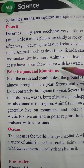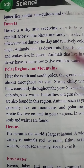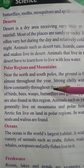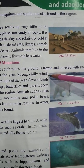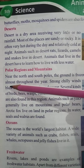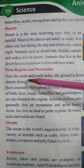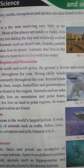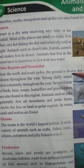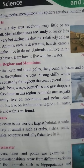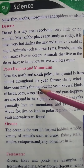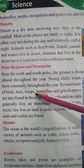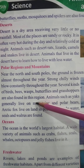Polar regions and mountains. Near the north and south poles, the ground is frozen and covered with snow almost throughout the year. Strong chilly winds blow constantly throughout the year. Several kinds of birds, bees, wasps, butterflies, and grasshoppers are also found in this region.